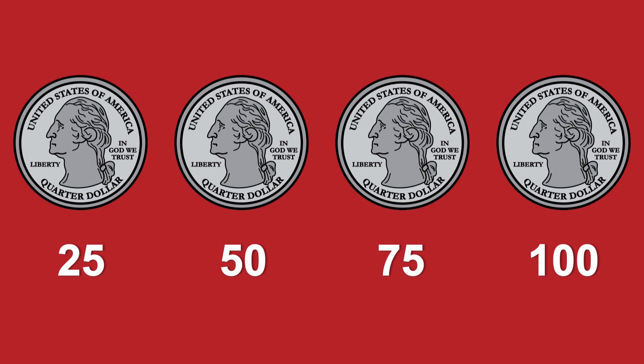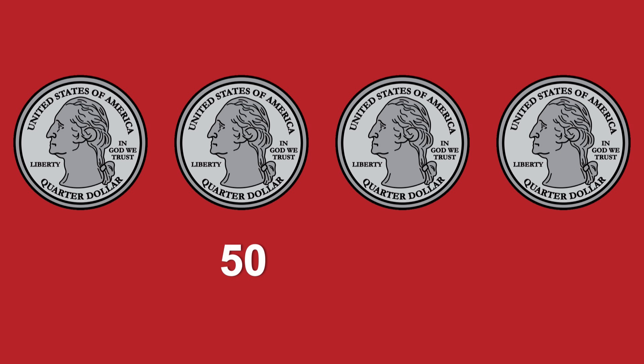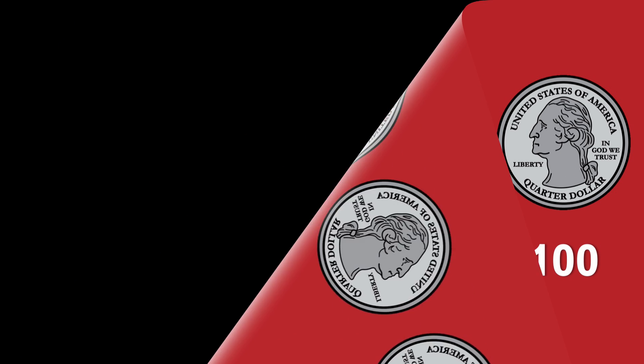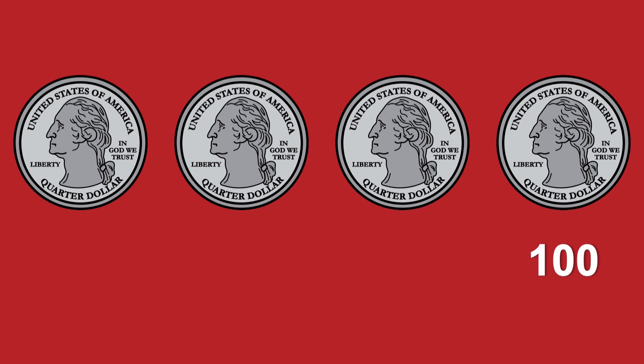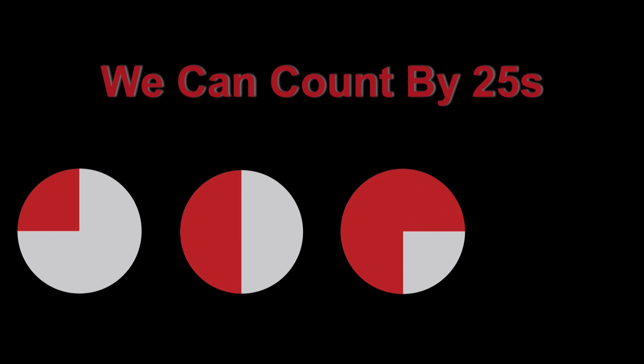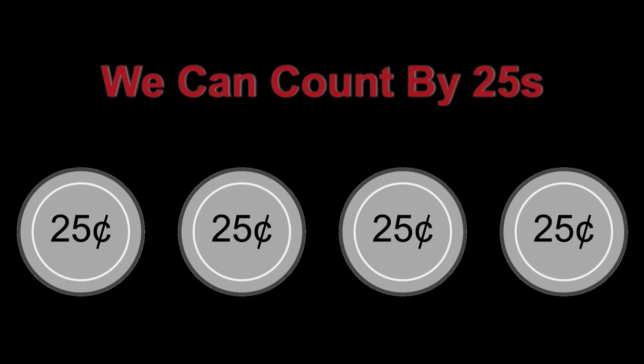So here we're working on skip counting, specifically with money, specifically with quarters. This is probably the easiest place to start, to make it up to $1, because you only have four numbers to count. I've chosen to use 100 cents instead of $1 to stay in the same unit of measurement. Teaching that change in measurement from 100 cents equals $1 is a difficult concept for many, and probably best left to a separate discussion or song.